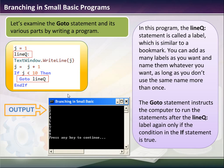In this program, the lineQ statement is a label, which is similar to a bookmark, and you can add as many labels as you want and name them whatever you want so long as you don't use the same name more than once. The goto statement instructs the computer to run statements after lineQ. If you're writing a small, simple program, this is a great way to write several little programs that are contained within one big program. For example, if I have an if-then statement and I want to jump to another part of the program, I would say goto whatever label is the line right before that particular part of the program.